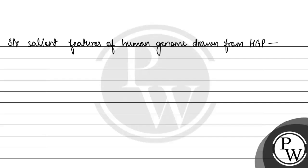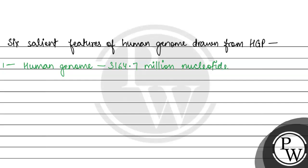The first observation from the human genome project about the human genome was that it consists of 3164.7 million nucleotide bases. This is the first salient feature of the human genome drawn from the human genome project.